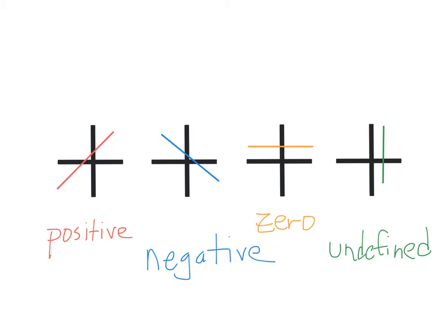In a few minutes, we will talk more about what it means to be undefined from a mathematical standpoint. But here you can see the four different possibilities for any line. Our red line, lines that lean in that direction, will always have a positive slope.